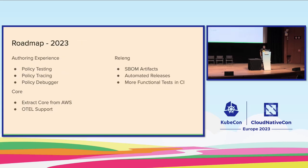Looking at our 2023 roadmap, we've been focused on improving the policy authoring experience. We've added policy testing for our shift left policies and want to continue adding that back to our regular cloud providers on all public clouds. We're also working on policy tracing — we have some built-in tracing support targeting cloud providers' native tracing experiences, but we want to add that as a standalone command line capability independent of cloud providers, along with policy debugging so you can step through policy execution.